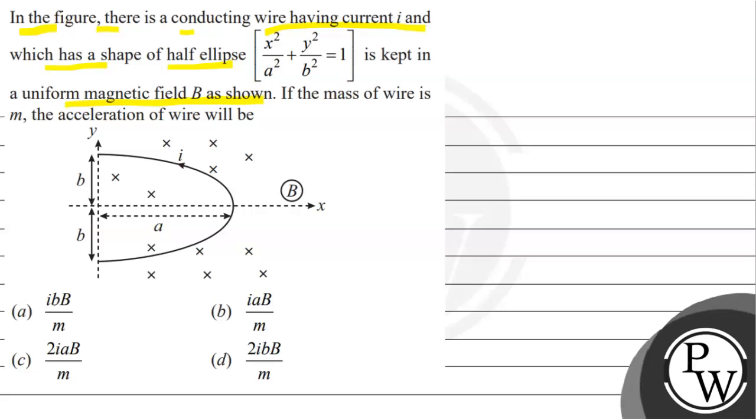The options are: (a) IBB/M, (b) IAB/M, (c) 2IAB/M, (d) 2IBB/M. We have to choose the correct option. Let's discuss the key concept.